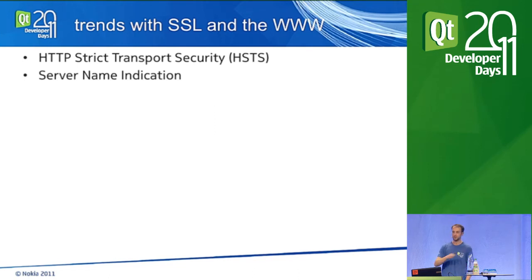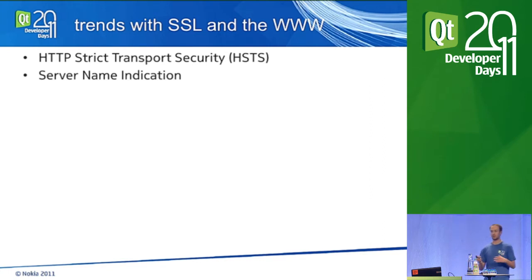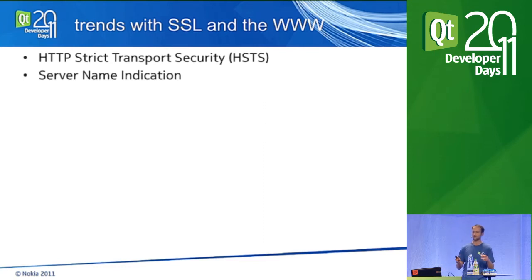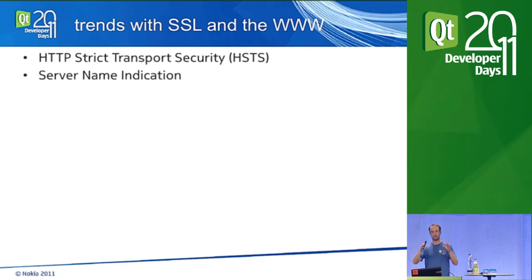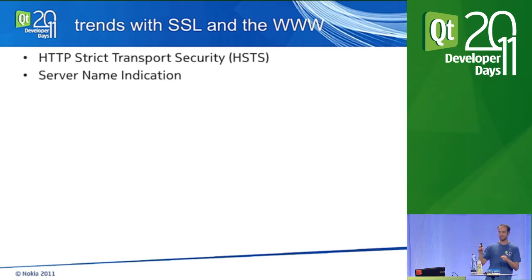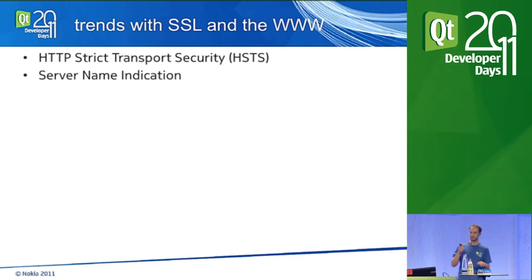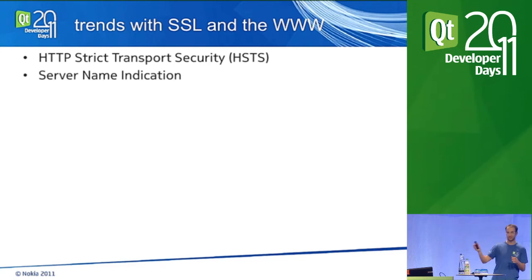Another trend is Server Name Indication (SNI). This addresses the problem of virtual hosting where a server hosts different certificates depending on which site you want to connect to. In HTTP there's a host header, but with SSL the server needs to know which certificate to present before HTTP traffic begins. SNI sends the server name to the server early, so the server can respond with the correct certificate.